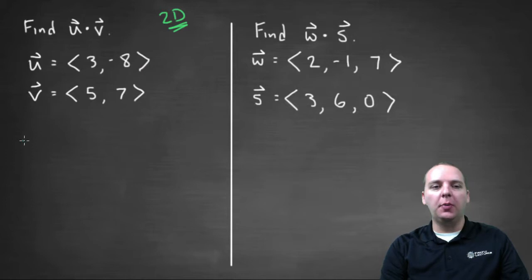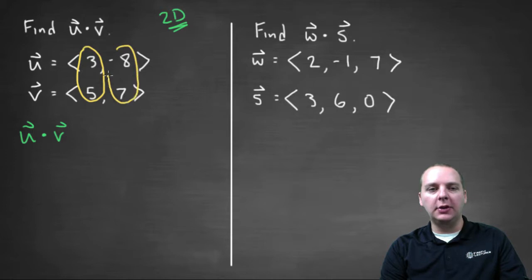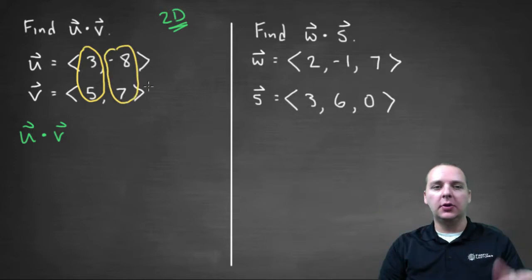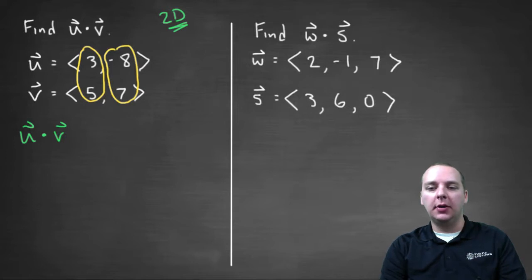So we remember our formula to take a dot product, to take u dot v. What we're going to do is multiply the i-th component, or the first components together, and multiply the j-th components together, and then we're going to add those results. And then that will be our dot product.